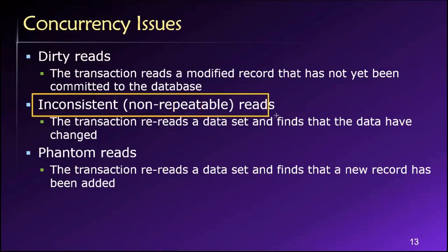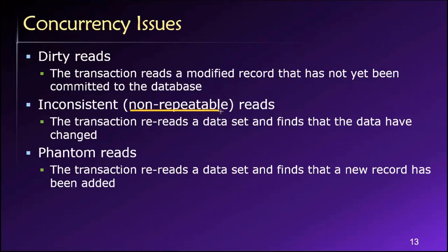Our second concurrency control problem is an inconsistent read, or a non-repeatable read. 'Non-repeatable' is a good way of describing this because it suggests that a transaction is going to read a value in the database multiple times — it might read it at the beginning of the transaction, and again at the end. If it finds that the value has changed between those two reads, then we have an inconsistent read.